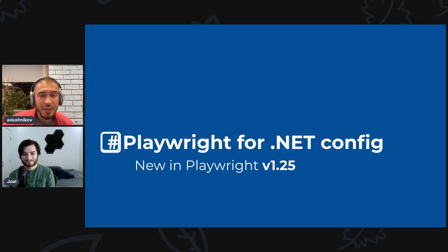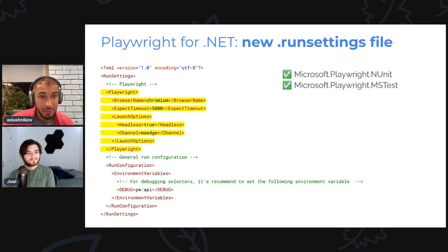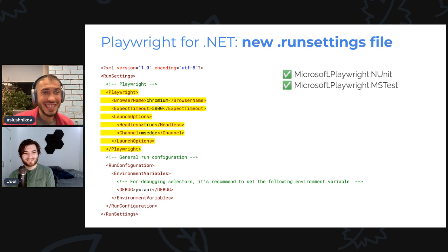Next up, the Playwright for .NET update. There's a runsettings file — there's now a new `playwright` module inside the runsettings config. This `PlaywrightTestSettings` module is respected by both the Playwright NUnit and Playwright MSTest plugins. It's essentially like a playwright config for .NET users — a better integration with the way .NET people like to configure things.